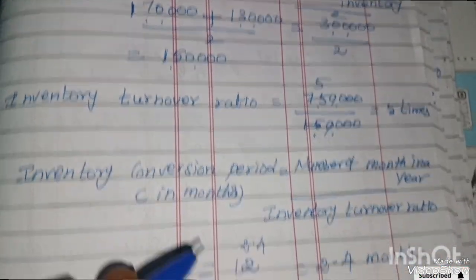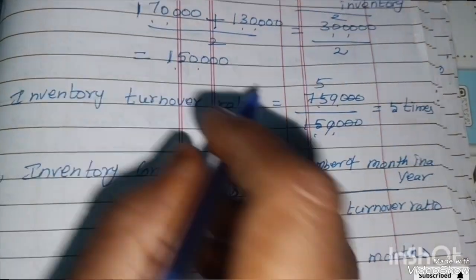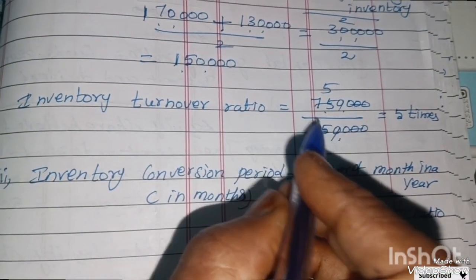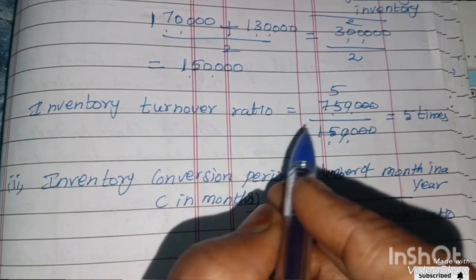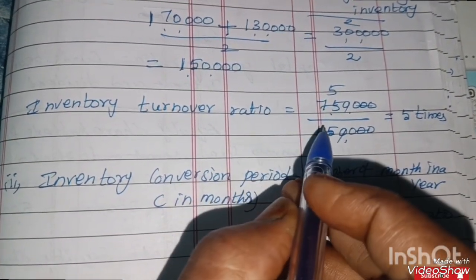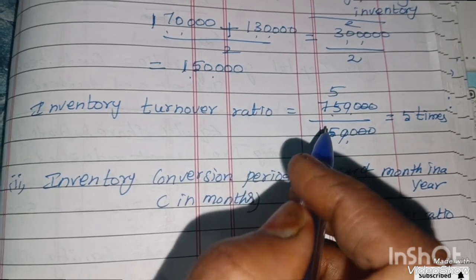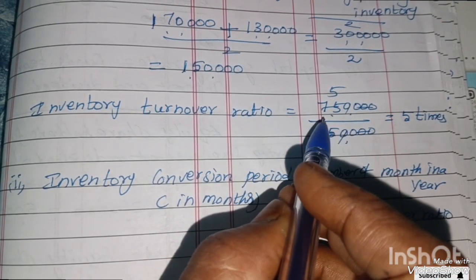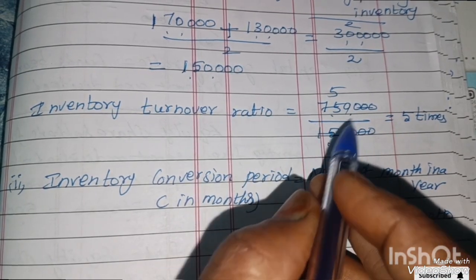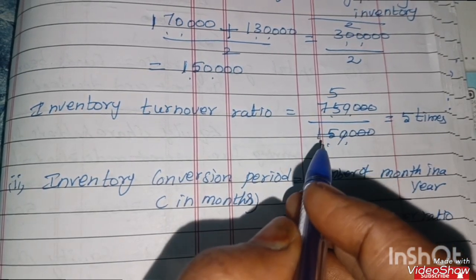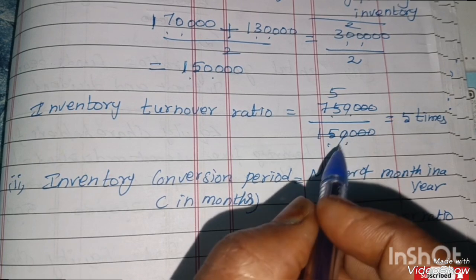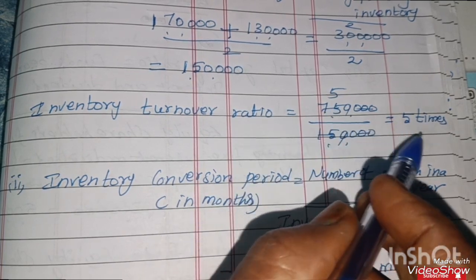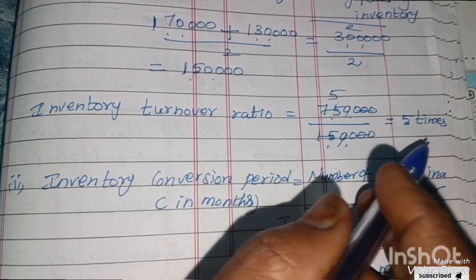Now, Inventory Turnover Ratio equals Cost of Revenue from Operations 7,50,000 divided by Average Inventory 1,50,000. This gives us 5 times as the Inventory Turnover Ratio.